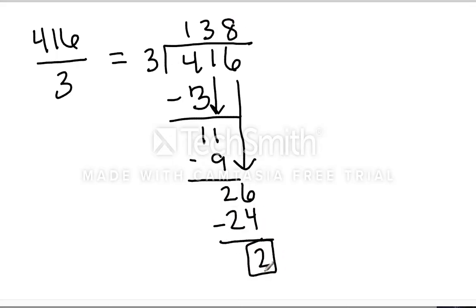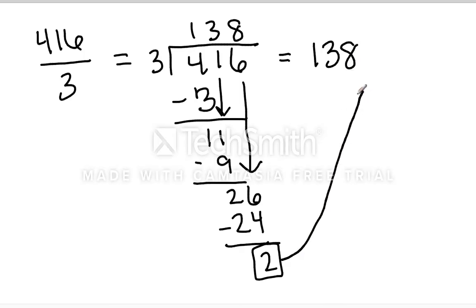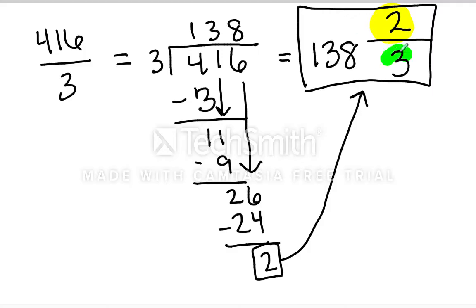And now I'm left with a remainder of 2, which means that 3 is not a factor of 416. I can write my answer as 138, and what do I have left over? I have 2 left over, so the 2 is still divided by 3. We're going to rewrite this as a fraction — this mixed number is your final answer: 416 divided by 3 is 138 and 2 thirds. The remainder is now the numerator, and the denominator is what we were originally dividing by. This is the exact same process we use in polynomial long division.